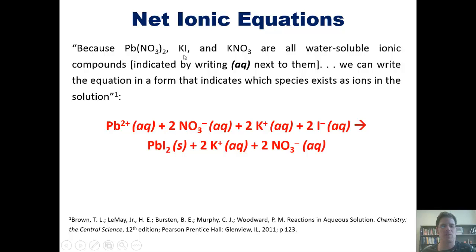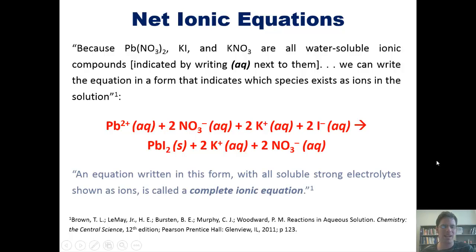KI, potassium iodide, separates out into potassium plus iodide minus. Now, they have coefficients of 2 in front of them just to make sure that they're balanced on both sides of the equation. But this is the idea, and the same thing happens down the line. Now, an equation written in this form with all of the strong electrolytes that are soluble shown as ions with little (aq)s next to them is called a complete ionic equation. Please note, by the way, that lead iodide shown here is a solid, so I cannot separate it out into lead and iodide ions.